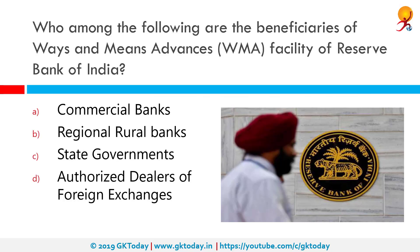Who among the following are the beneficiaries of Ways and Means Advances facilities of the Reserve Bank of India? That would be state governments. Ways and Means Advances is a mechanism used by the RBI under its credit policy to provide to states banking with it, to help them tide over temporary mismatches in the cash flow of their receipts and payments.